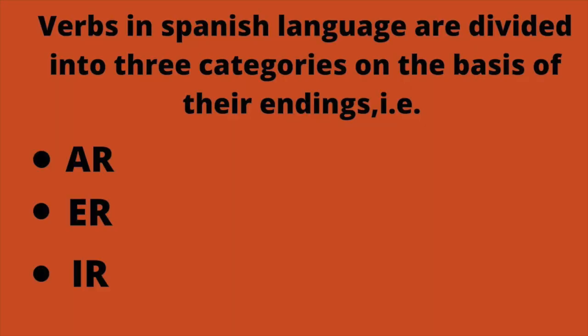In Spanish, there are three types of verbos regulares. Basically, there are three endings: one is the -ar ending verb, another is the -ir ending verb, and the third one is the -er ending verb.